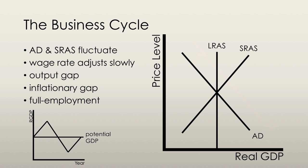The business cycle occurs because aggregate demand and short-run aggregate supply fluctuate, but the money wage rate does not adjust quickly enough to keep real GDP at potential GDP. The output gap is defined as the gap between real GDP and potential GDP.